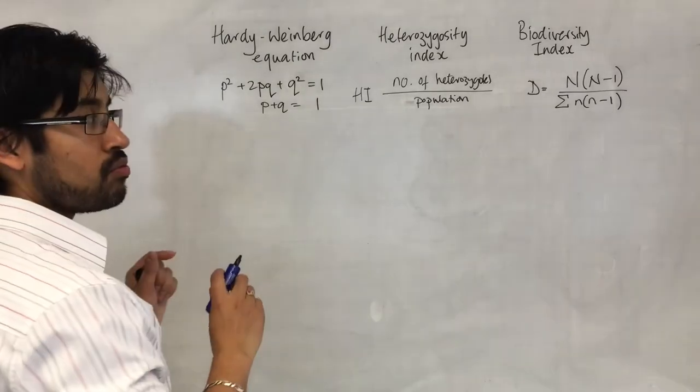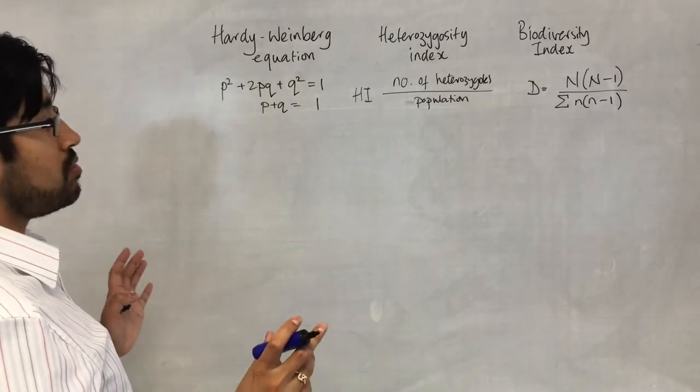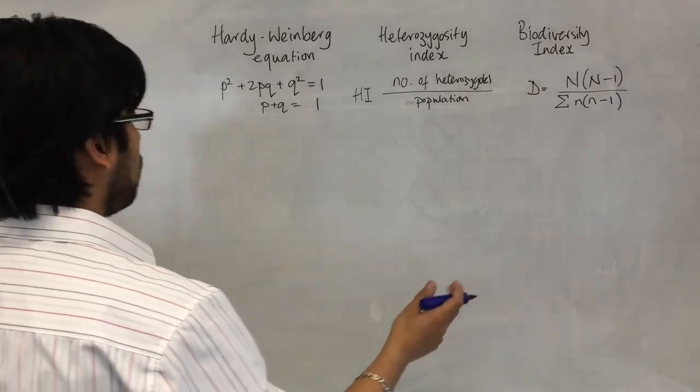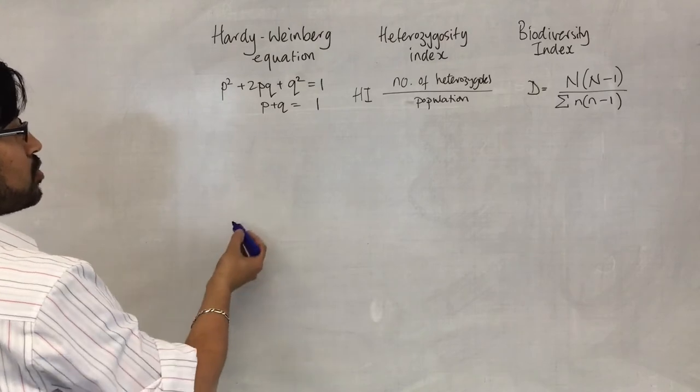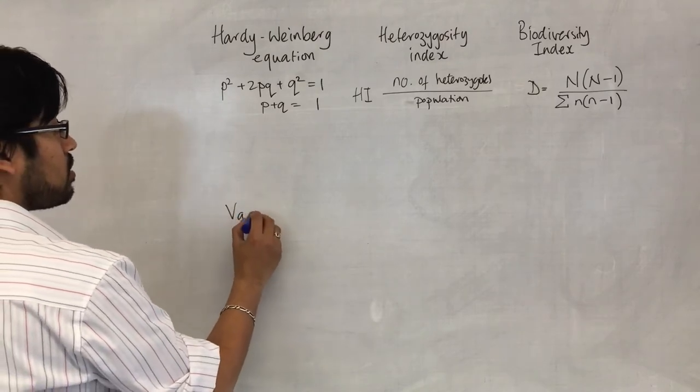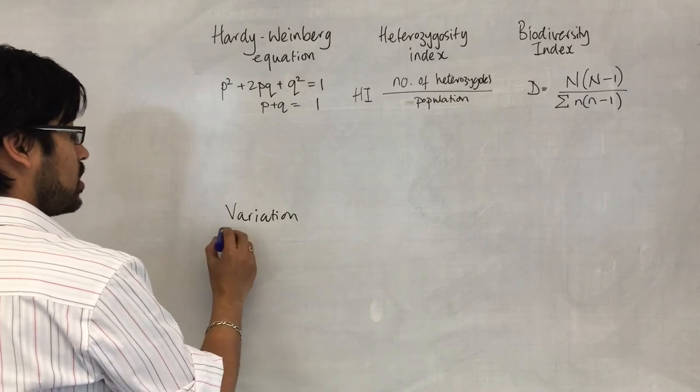Let's review the process of natural selection and see where this all might apply. For any natural selection to occur, you need variation in your population.